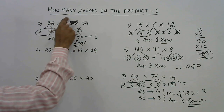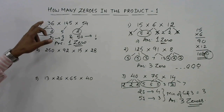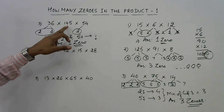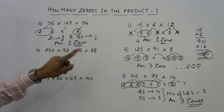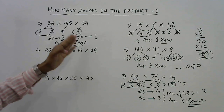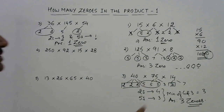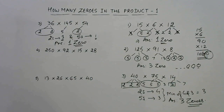You can pick up a calculator and check the product of 36 × 145 × 54 — the product will contain only one zero at the end. Note that I am talking of zeros at the end; there may be zeros in the middle of the number, but we are not considering those.